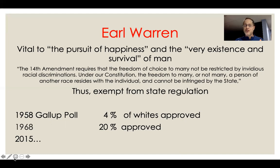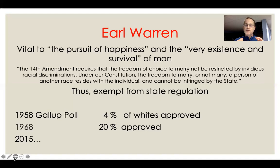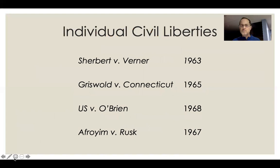The ACLU attorneys argued that these laws were central to maintaining white supremacy. Earl Warren, in his opinion, wrote that laws barring interracial marriage were designed for the maintenance of white supremacy — the first time the court referenced that phrase. This was part of a larger cultural revolution. During the Warren Court era, few whites approved of interracial relationships at the beginning. A modest amount did by 1968. And by 2015, over 90% approved.